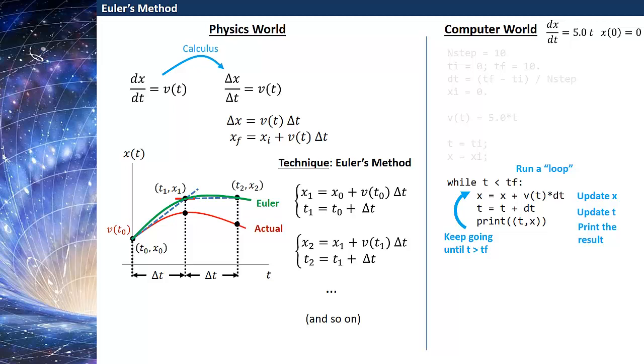And then I have the t coordinate and it's also continuously updating, just as we saw for the Euler method technique that we've written on the physics world side. And then just so I can see what's going on here I'm going to print the t and x coordinates so I can see what the calculation is actually doing.